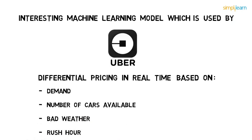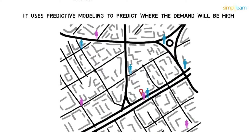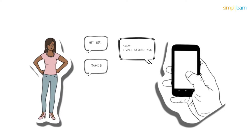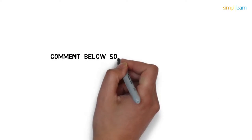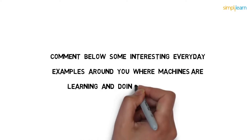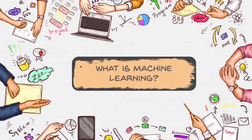Uber's surge pricing model uses differential pricing in real time based on demand, number of cars available, bad weather, rush hour, and more, to ensure that those who need a cab can get one. It also uses predictive modeling to predict where demand will be high so drivers can meet that demand and surge pricing can be minimized.